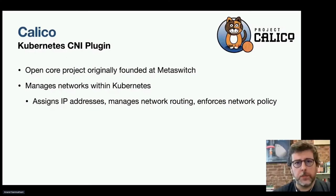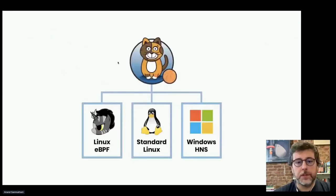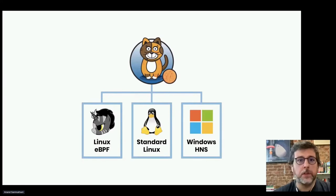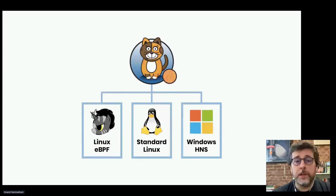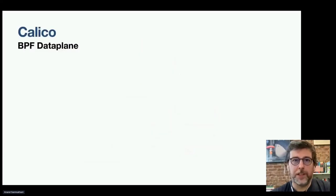This architecture means Calico can support multiple data planes, and as we know, all software has its own trade-offs — different data planes are more appropriate for different use cases. Calico's default data plane is based on Linux IP tables: it's battle-tested and well-understood. But Calico offers additional data planes to support environments like Windows or to provide different affordances, such as a data plane based on BPF, which is what we're going to be talking about today.